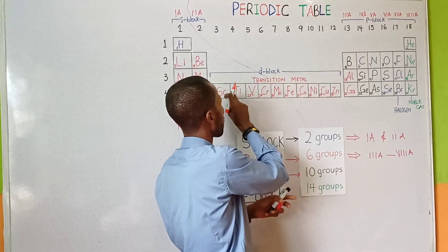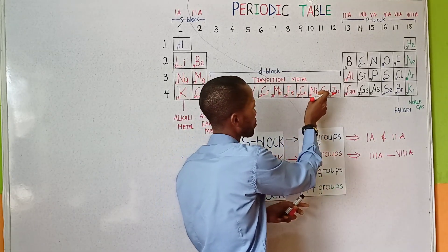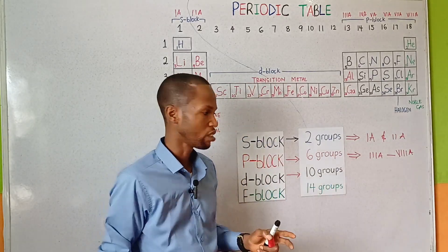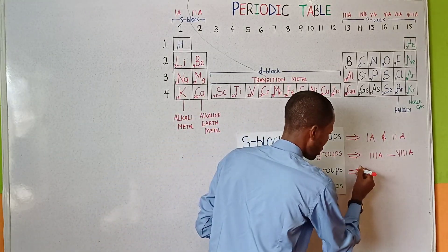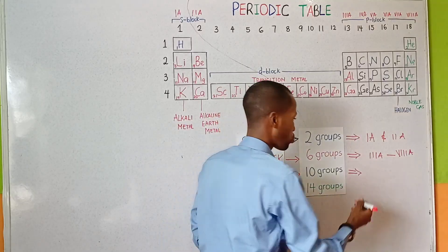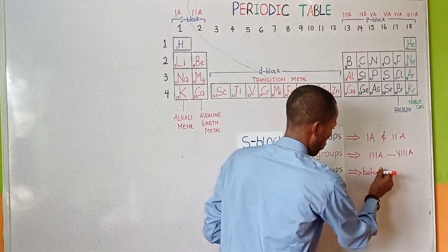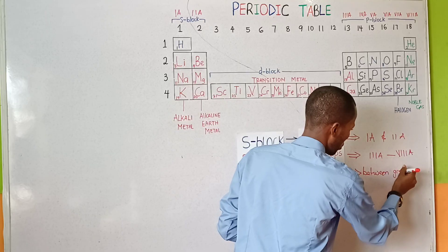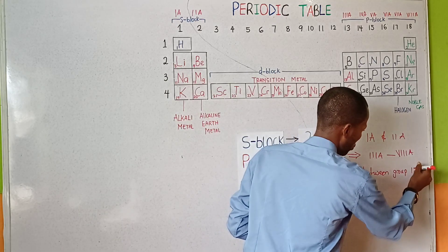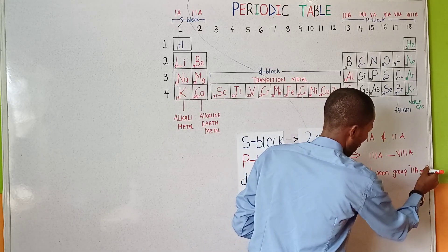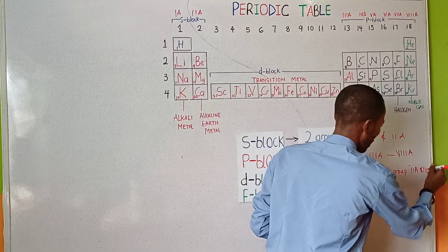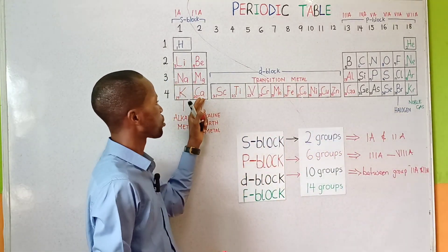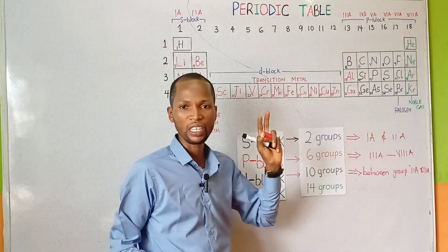Counting 1 through 10, the D block contains 10 groups, which is found between group 2A and group 3A.